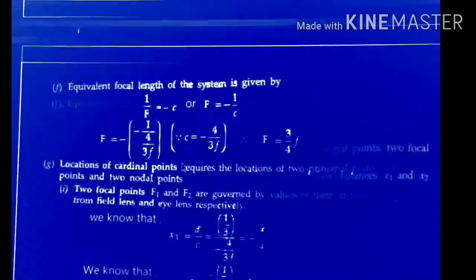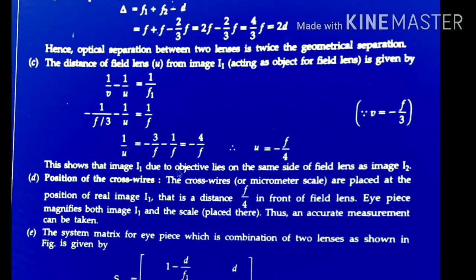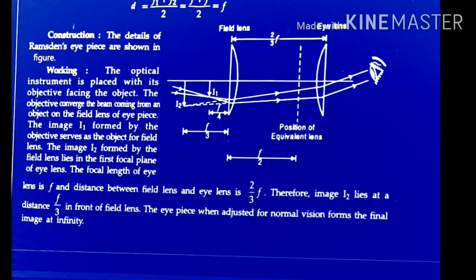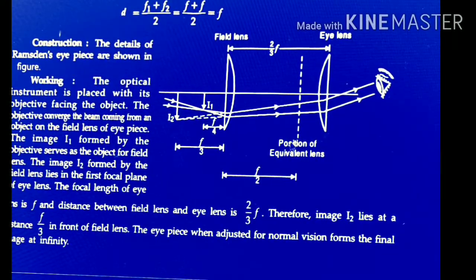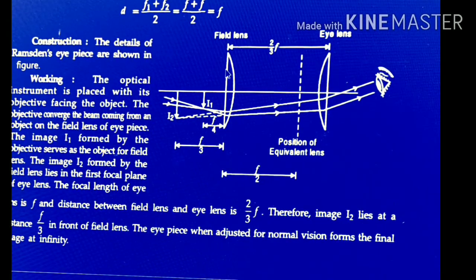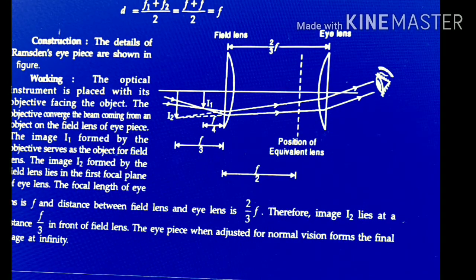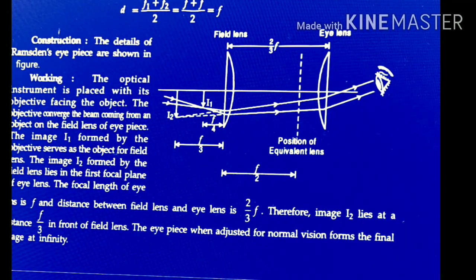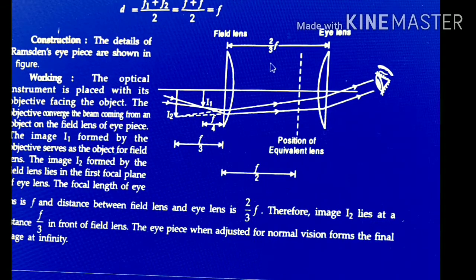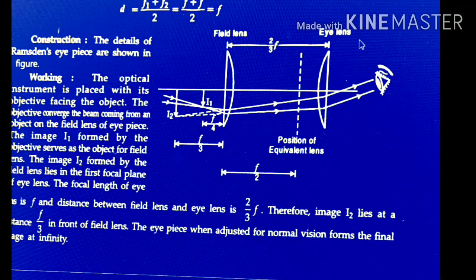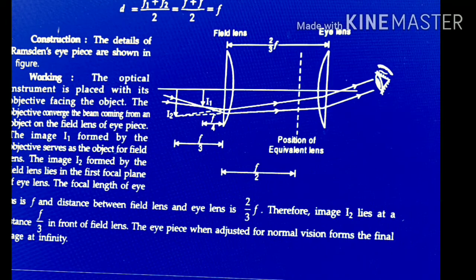This is the Ramsden eyepiece. It also consists of two plano-convex lenses, separated by a distance 2F/3. In this case both lenses — field lens and eye lens — have the same focal length F. It consists of two plano-convex lenses each of focal length F, separated by a distance 2F/3.